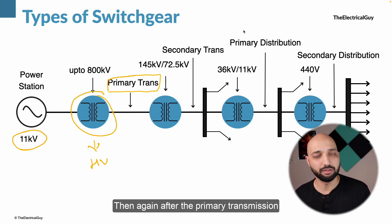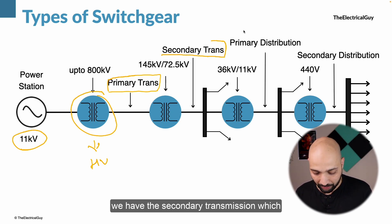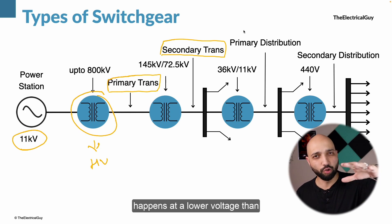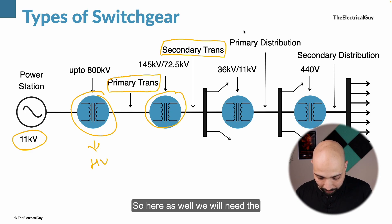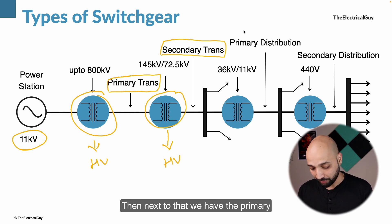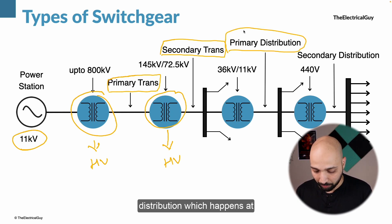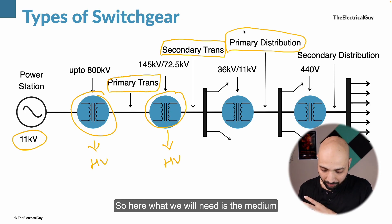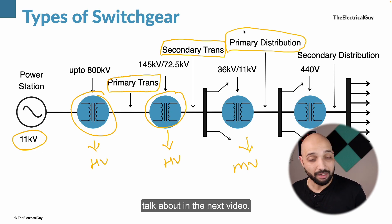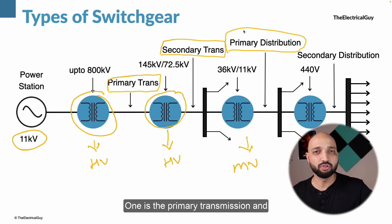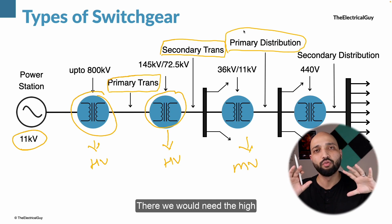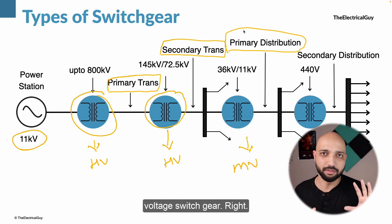After the primary transmission we have the secondary transmission, which happens at a lower voltage than the primary transmission — here as well we will need the high voltage switchgear. Then next we have the primary distribution, which happens at a further stepped-down voltage, where we will need the medium voltage switchgear. So two locations require high voltage switchgear: primary transmission and secondary transmission.